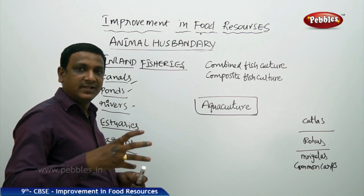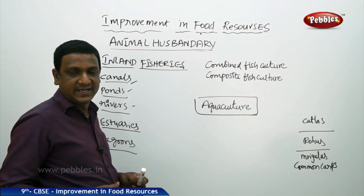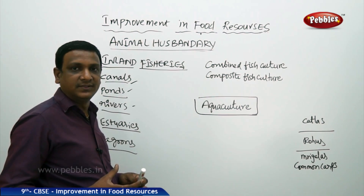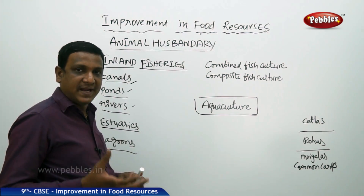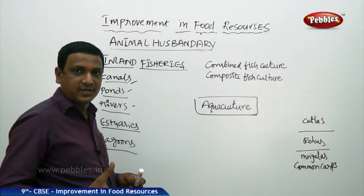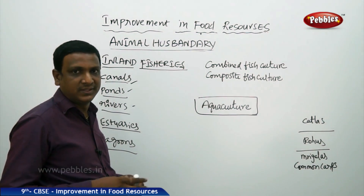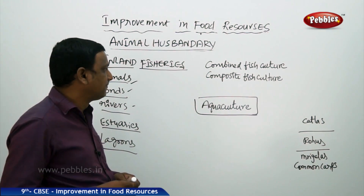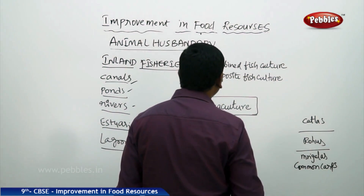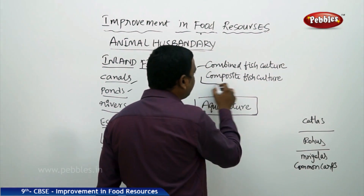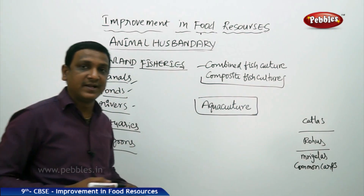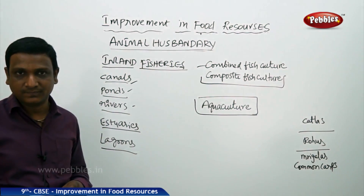Fish can also be grown combinedly within a paddy field along with rice. When water is logged in the paddy crop, farmers can grow fish simultaneously — this is a helpful combined fish culture method. There is also composite fish culture, a technique in which different varieties of fish are grown together, which is very economical.